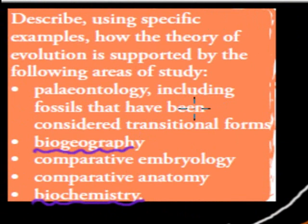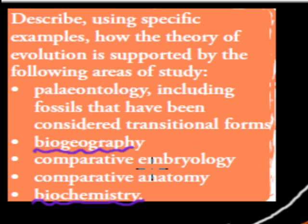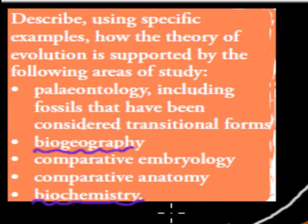To recap: paleontology was the study of fossils, using the crossopterygian fish as the transitional form example. Biogeography was the study of biological distribution in different areas, using the Waratah plant as the example. Comparative anatomy covered the pentadactyl limb — the five-fingered limb that all vertebrates share. Comparative embryology looked at how all early embryos, especially vertebrates, look very similar. And biochemistry was the study of molecules in our body showing that all living life forms use very similar molecules to function.